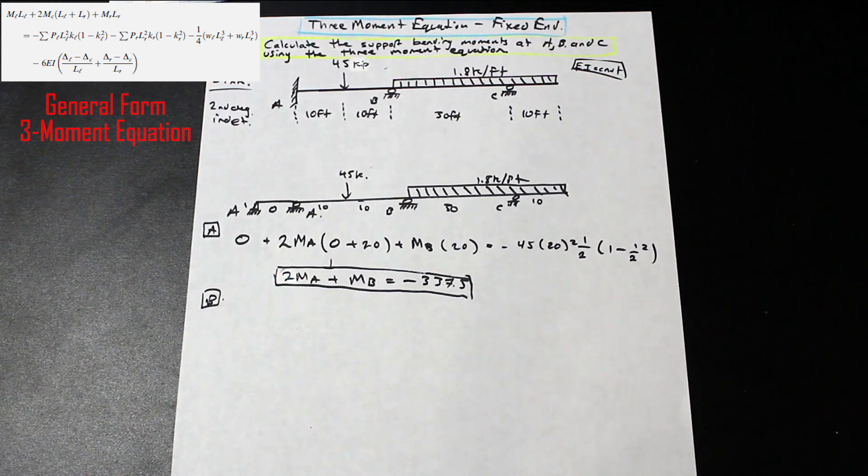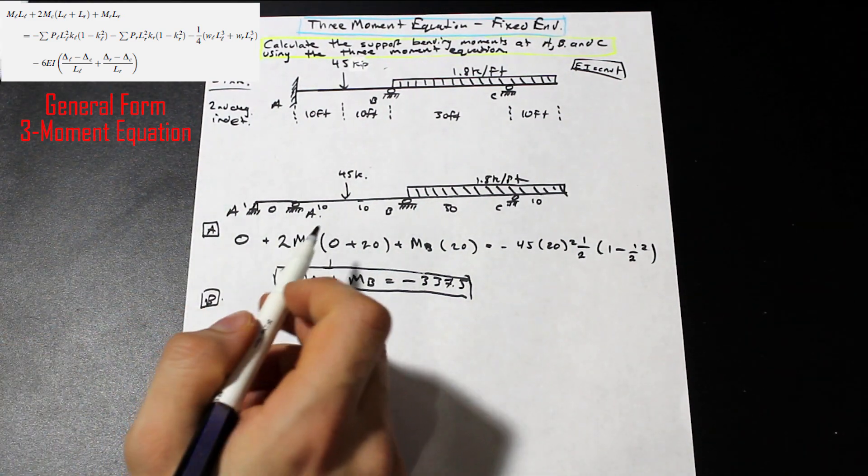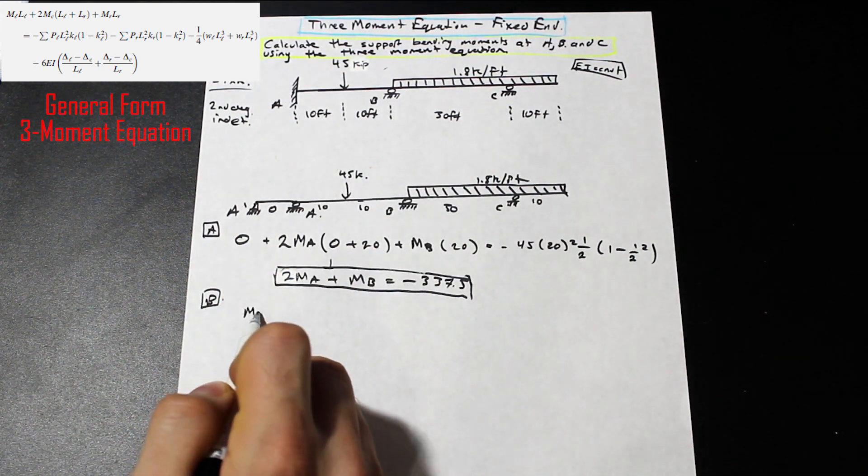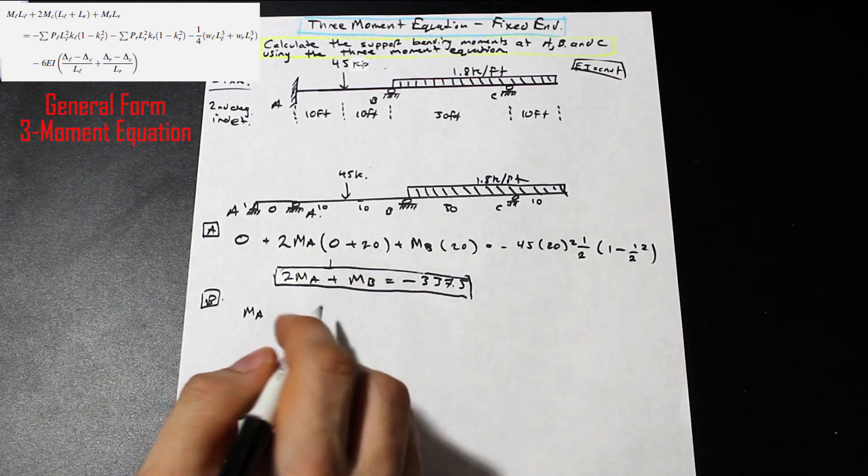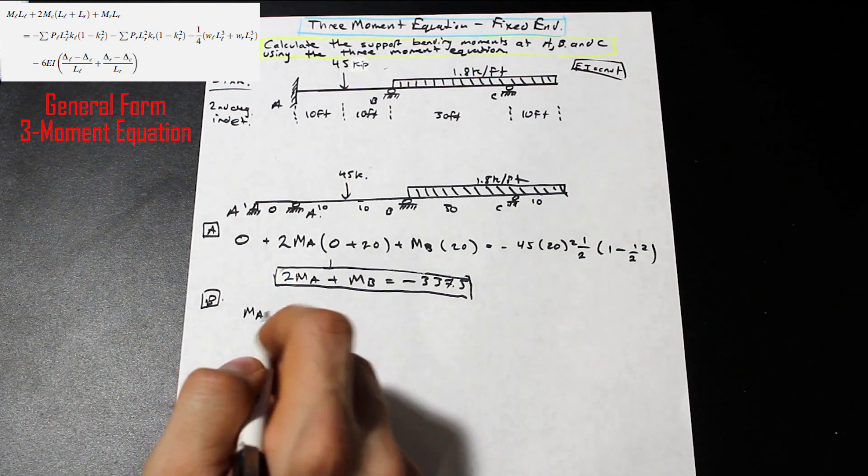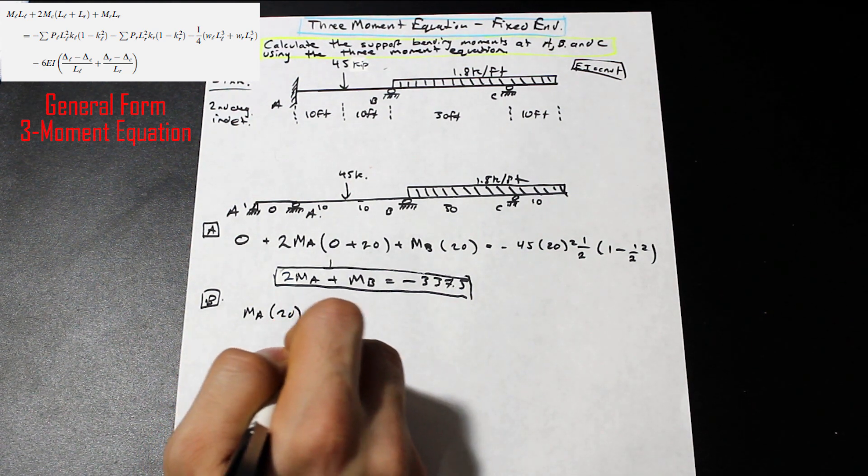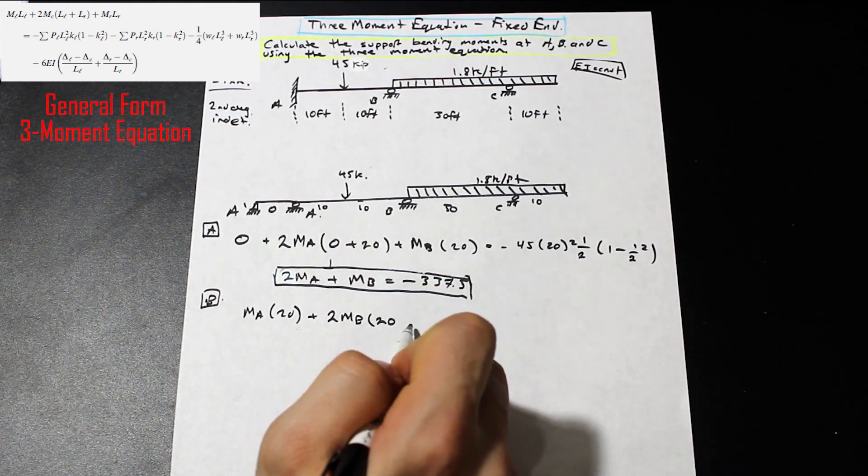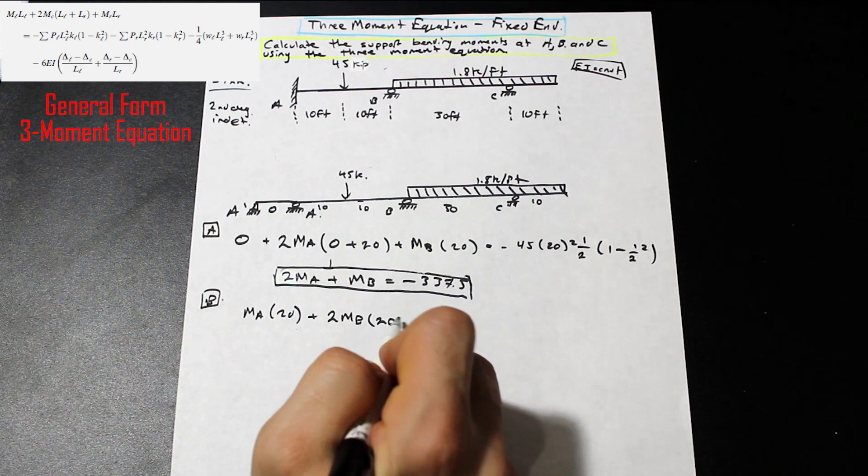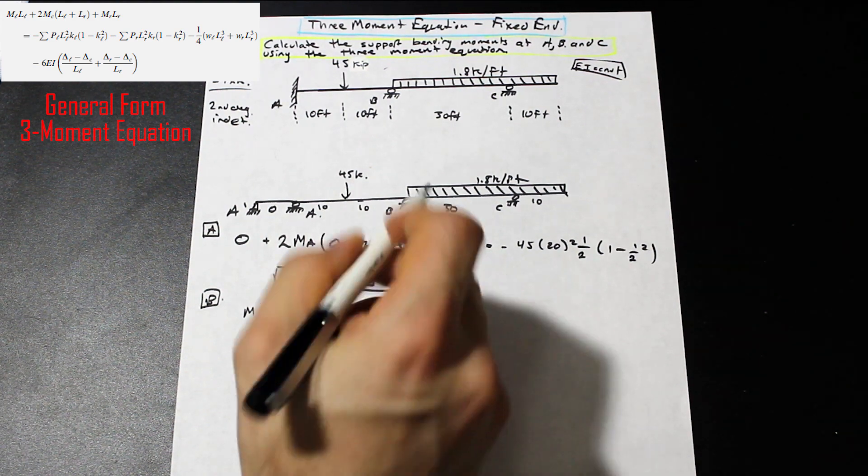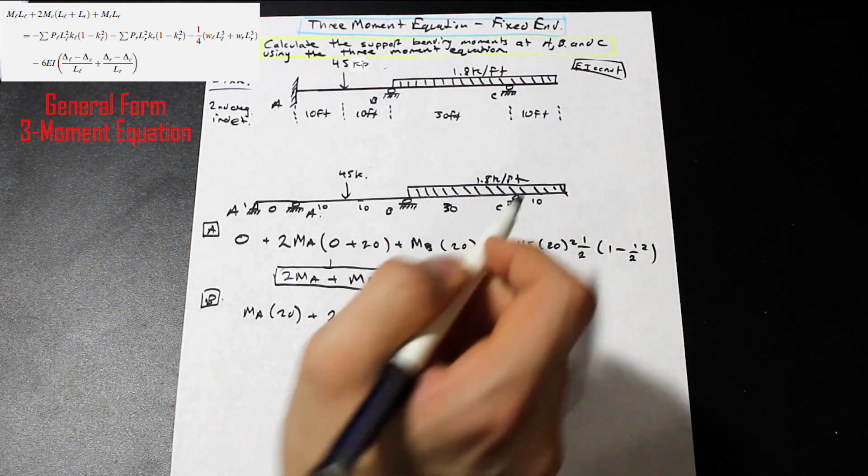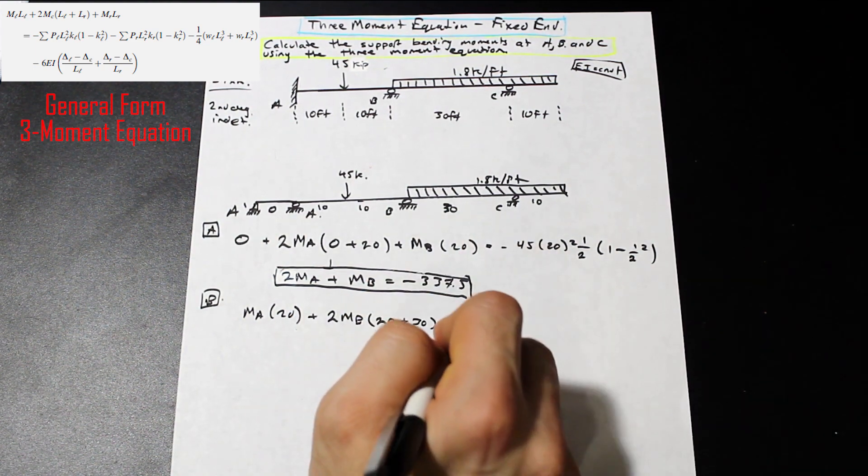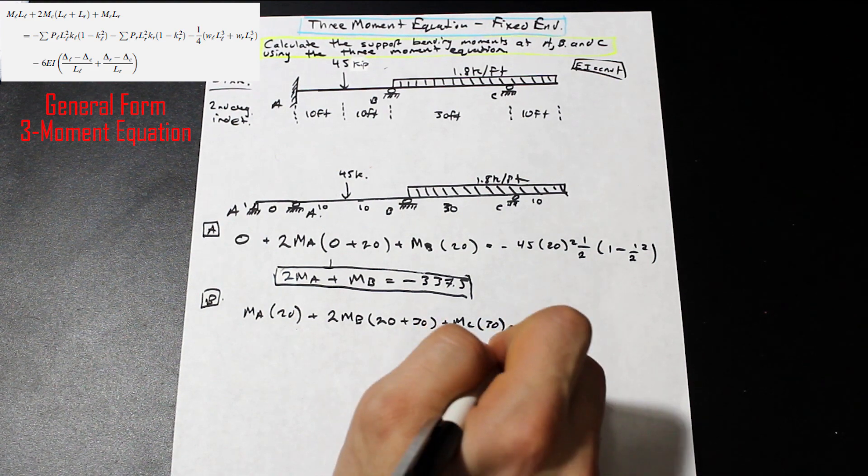So let's apply it for B now. We're going to apply the three-moment equation for B. Let's take a look. So we have our moment to the left. Our moment to the left is going to be MA, and that's going to be times L, which is 20. We have 2MB, and that's going to be out to the left and to the right. That's going to be 20 plus 30. 20 and 30 here. Cool. Let's take a look at that moment to the right. That's going to be C.